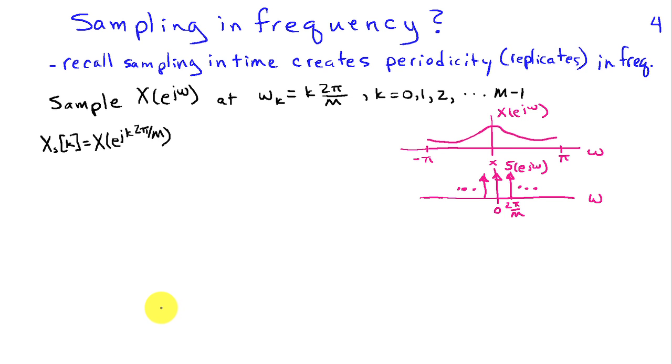So here's how we're going to develop this insight. I'm going to take x of e to j omega. I'm going to sketch that like this. And when I sample it at multiples of, in this case, we're going to pick some number of samples, capital M. I'm going to sample it at multiples of 2 pi over M and call that my DTFT. And we'll use the subscript notation here to indicate that this is a sampled signal.